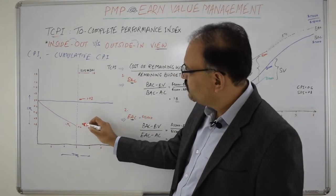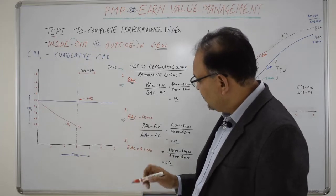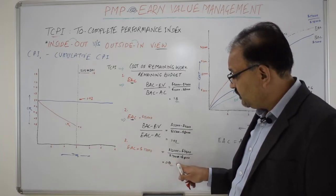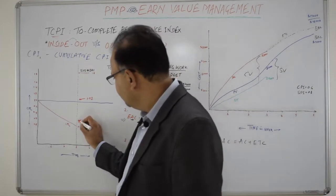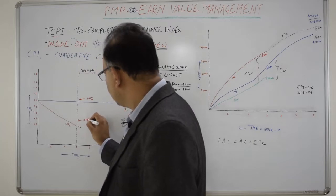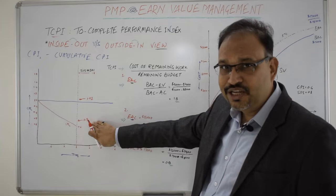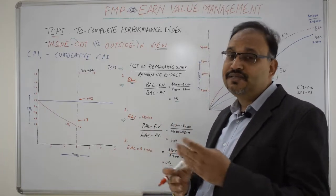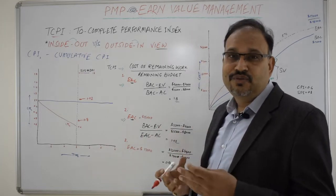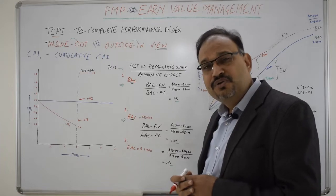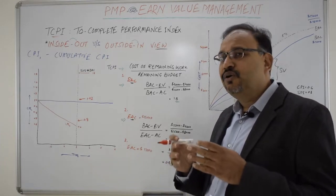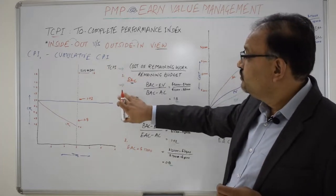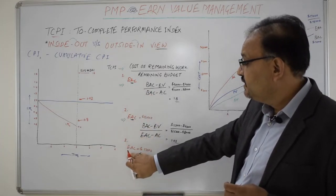In the second scenario, the BAC is revised to an EAC of $15,000, requiring a TCPI of 1.02 — a gap of 0.4 from the current 0.6, which is again highly unlikely to achieve. In the third scenario, with an EAC of $17,000, the required TCPI is 0.8 — just a gap of 0.2. This is a likely scenario if the project cuts unnecessary costs, upskills the team, replaces junior members with experienced staff, asks the team to stretch a bit, or has senior members contribute to design and coding.